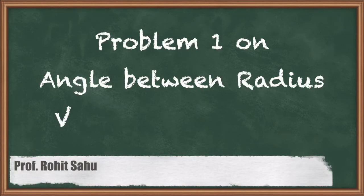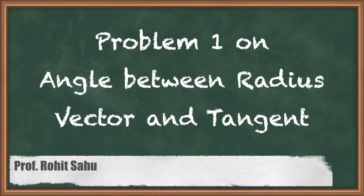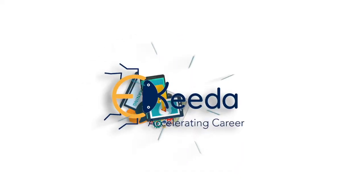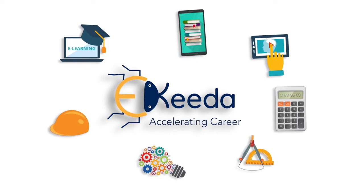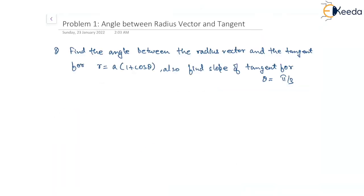Hello. In this session we'll see the first problem on finding the angle between the radius vector and the tangent. We have to find the angle between the radius vector and tangent where r is given as a times of 1 plus cos theta, and we also have to find the slope of the tangent for theta equal to pi by 3.